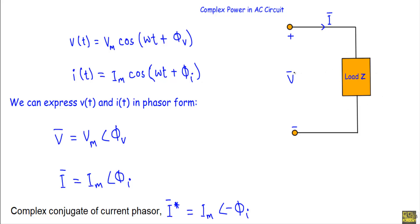Let's say we have a load impedance Z. If we apply a sinusoidal voltage to this load impedance, we will get a sinusoidal current i flowing in the circuit. If we express the sinusoidal voltage and sinusoidal current in standard form, we get v(t) = Vm·cos(ωt + φv), where Vm is the maximum value of the sinusoidal voltage, ω is the angular frequency, and φv is the initial phase of the applied voltage. The resultant sinusoidal current i(t) = Im·cos(ωt + φi), where Im is the maximum value of current and φi is the initial phase of the current.